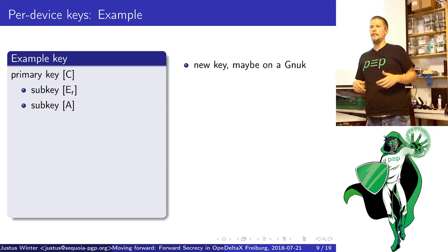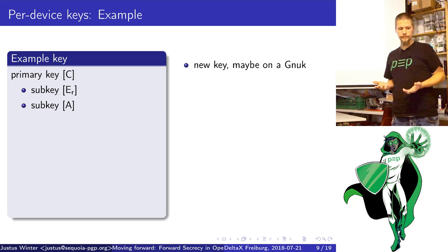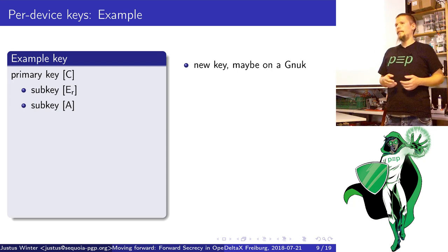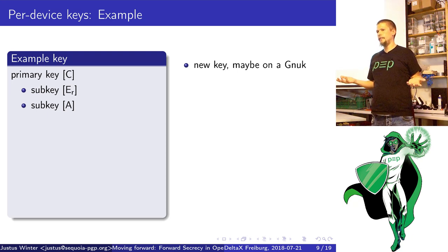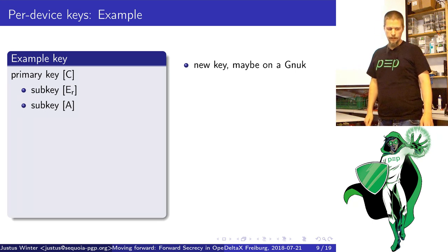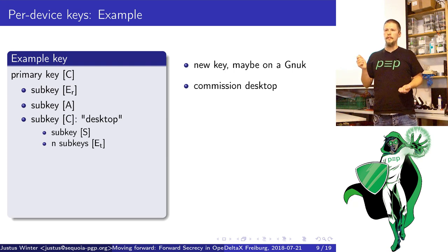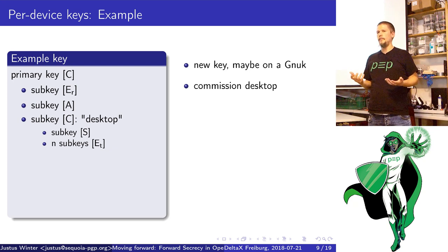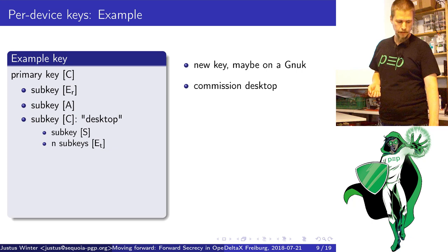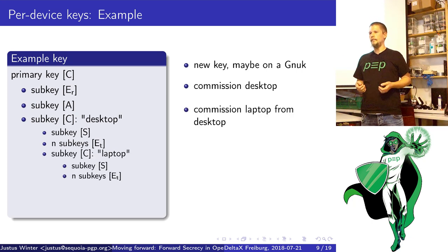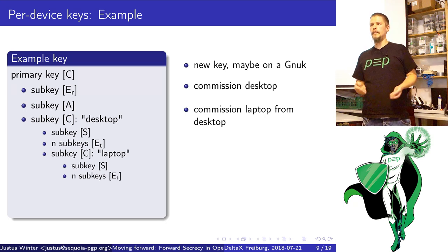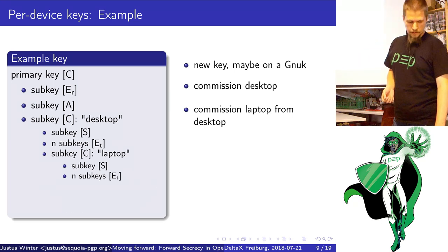I'd like to walk you through a workflow we could support with that scheme. We create a certification-capable primary key — that's our cryptographic identity. Then we may have an encryption subkey for data at rest and maybe an authentication key, and this set of keys we can put on a smart card and lock away. Then on our desktop, our main machine, we create a certification-capable subkey with a binding signature using the primary key, and then we can lock the primary away. The desktop can create its own encryption subkeys and signing subkey. We can then add a laptop and a phone the same way.